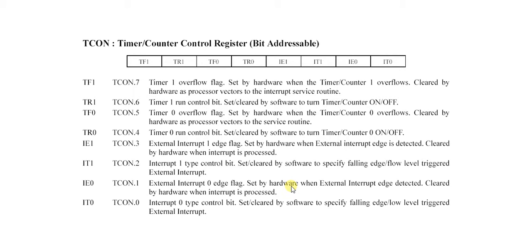Let's start with TCON.7. As you can see, it is TF1. TF1 means Timer1 overflow flag, so it is basically a flag bit for Timer1. It is set when the timer rolls from all ones to 0, meaning when the timer overflows. It is set by hardware.